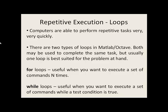In this lesson, we'll begin learning how to harness the true power of computers, which is the ability to perform repetitive tasks very quickly, and we often use loops to do this. There are two types of loops in MATLAB and Octave: for and while loops. Both may be used to do the same task, but usually one loop is best suited for a particular problem. For loops are more useful when you want to execute a set of commands a known number of times. While loops are very useful when you want to execute a set of commands as long as a certain test condition is true.